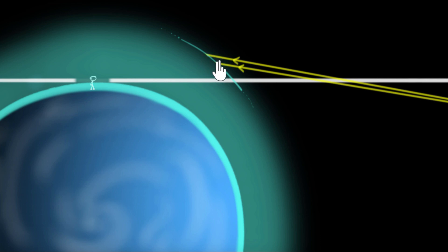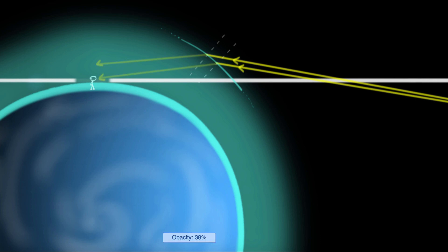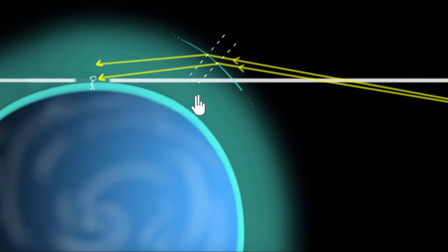And because the light is going to slow down, if we draw a couple of normals over here, this light will bend towards the normal. So if you see the refracted light — these are a couple of normals — notice the light has bent towards the normal because it has slowed down. And if you're wondering why light bends towards the normal when it slows down, well, we've talked a lot about this in previous videos on refraction.